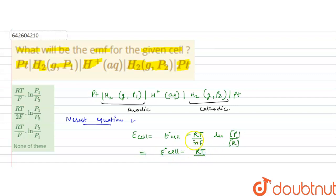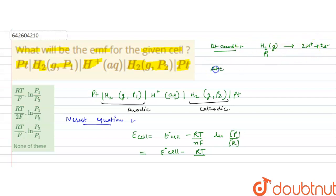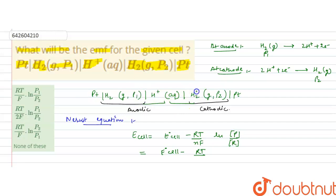Now, the n value: oxidation takes place at the anode. At the anode, H₂ gas at pressure p1 forms 2H⁺ + 2e⁻ (oxidation reaction). At the cathode, H⁺ ions + 2e⁻ form H₂ gas at partial pressure p2. The left-hand side is the anodic and the right-hand side is the cathodic reaction. The number of electrons involved is 2, so n = 2.